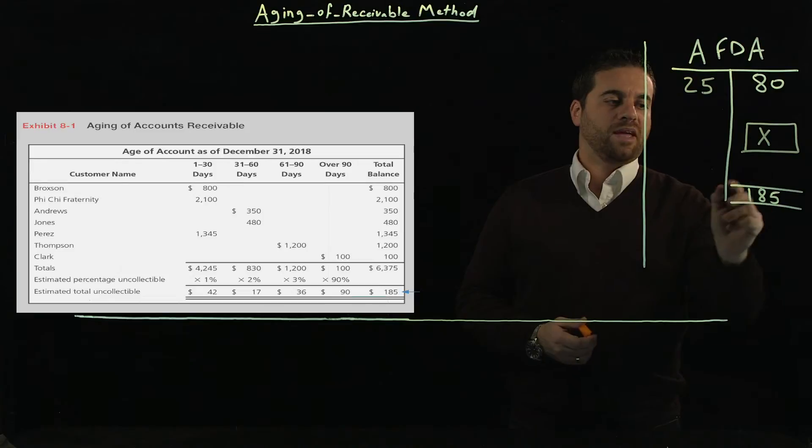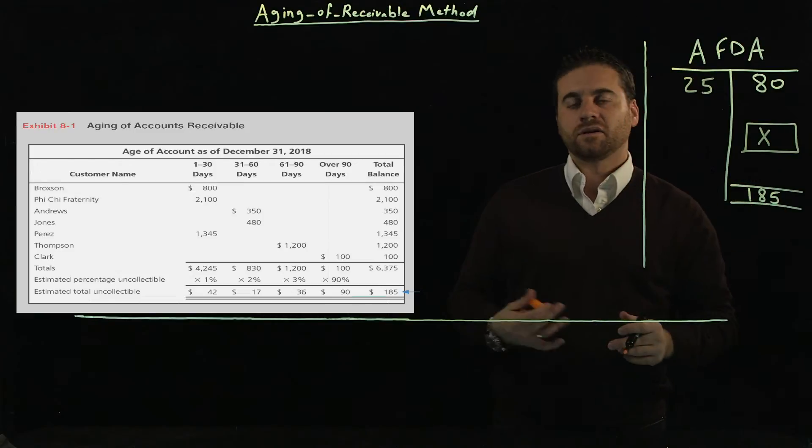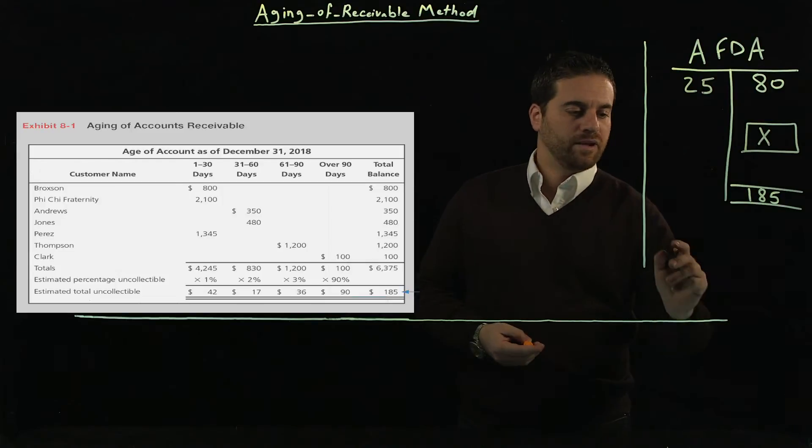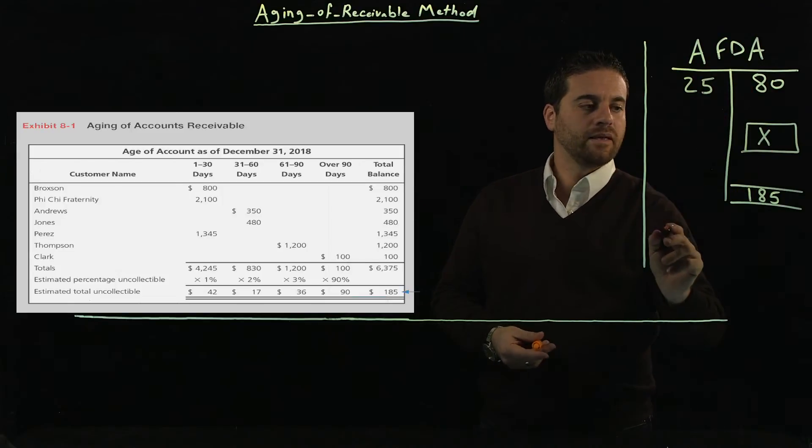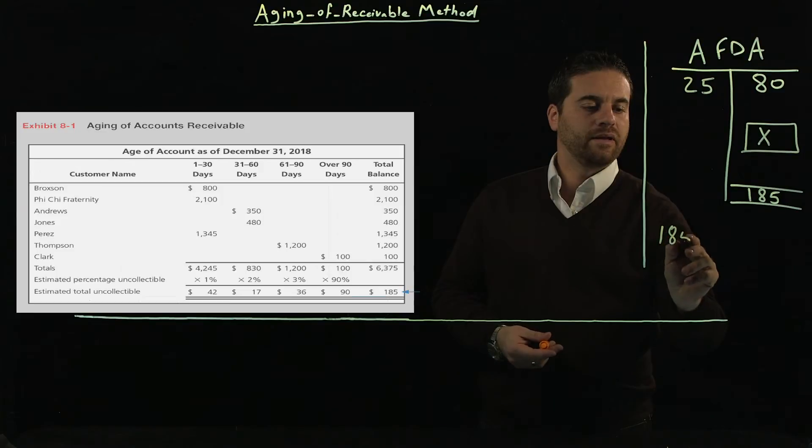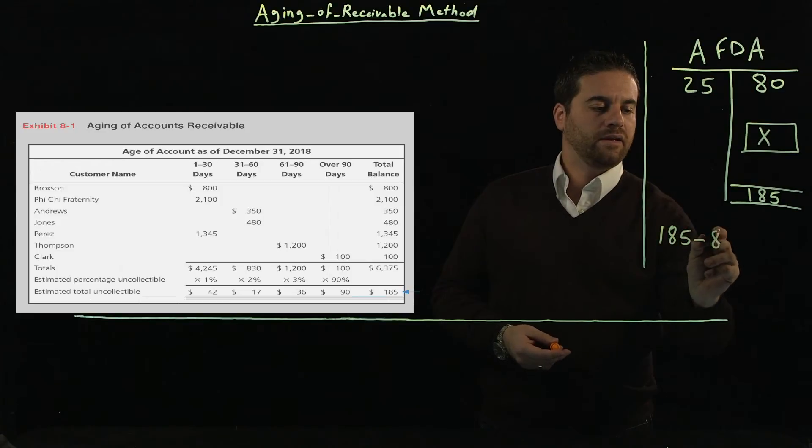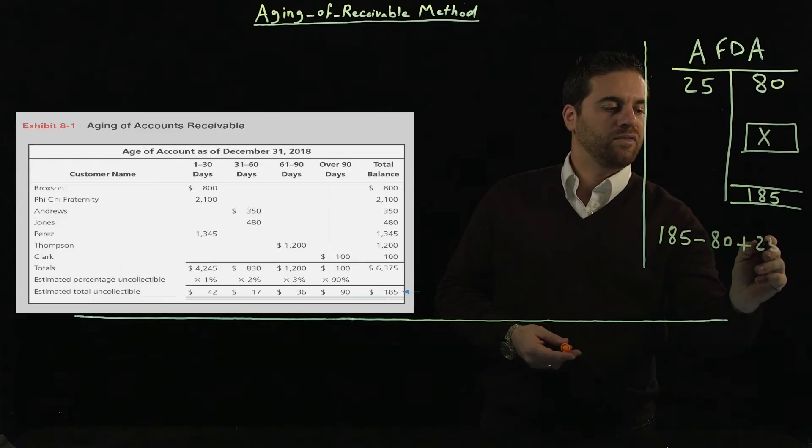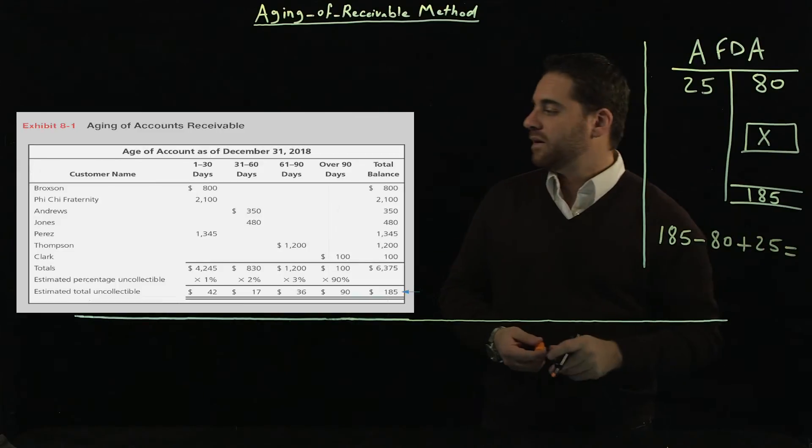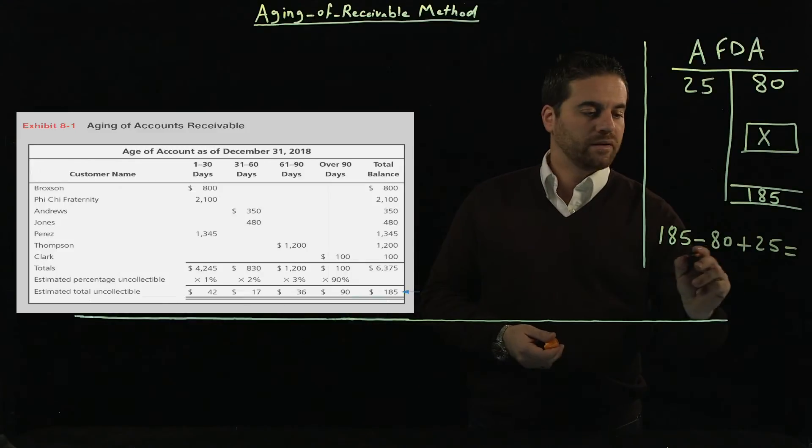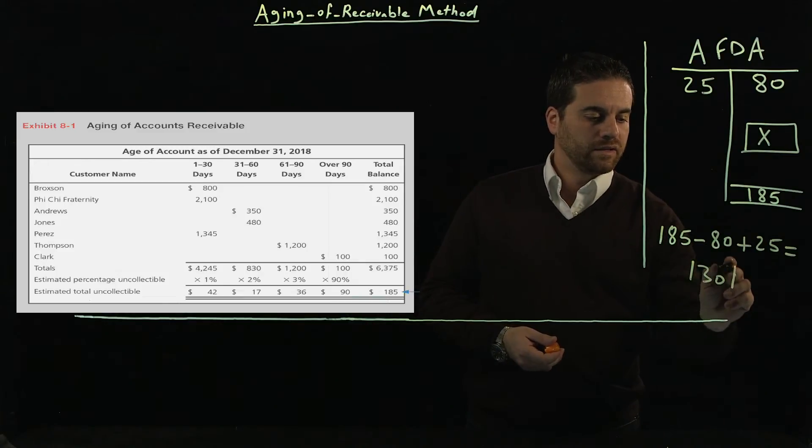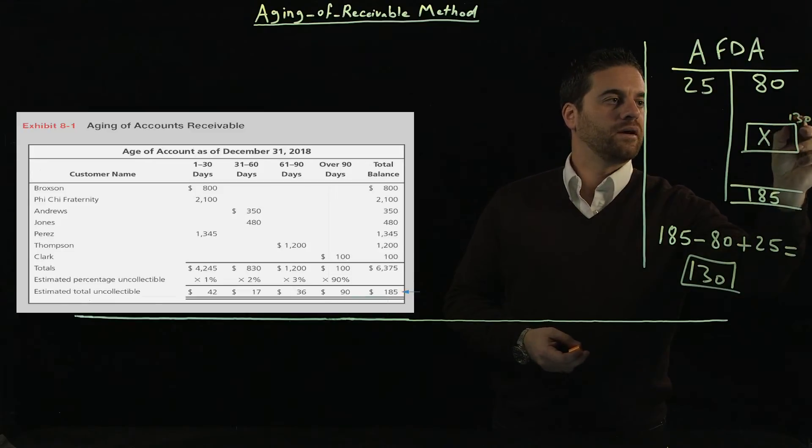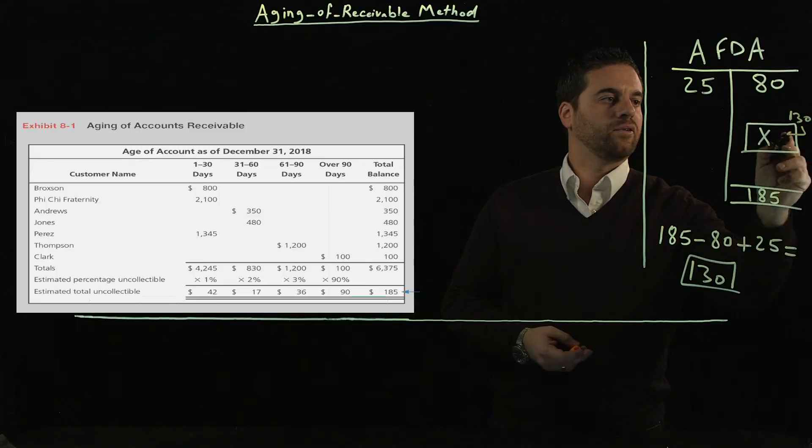It's just when we came up with the 185, it took us longer time to find it because we used more percentages. So again, we're going to do 185 minus 80 plus the 25. And if we do the quick math, that will be $130. So that would be $130 for X.